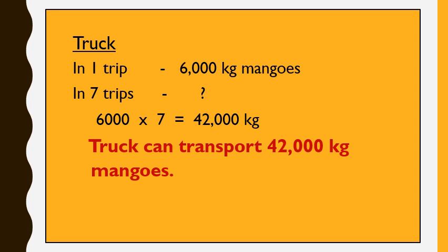In the same way, in one trip, a truck can transport 6,000 kg of mangoes at 44 km per hour. So, in 7 trips, we cross multiply and divide: 6,000 multiplied by 7, divided by 1, gives 42,000 kg. So, the truck can transport 42,000 kg of mangoes in 7 trips.